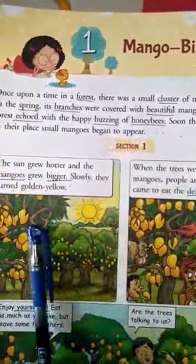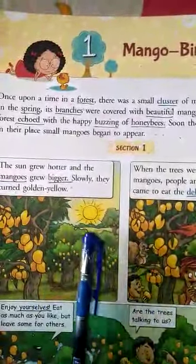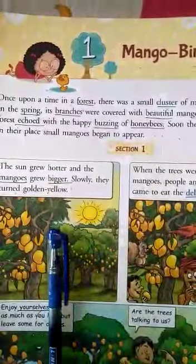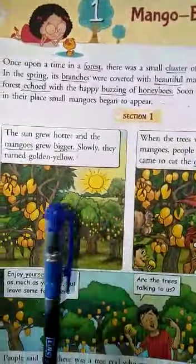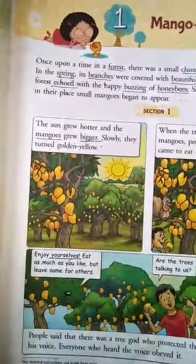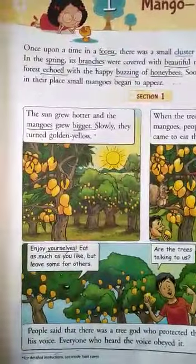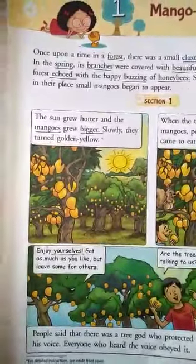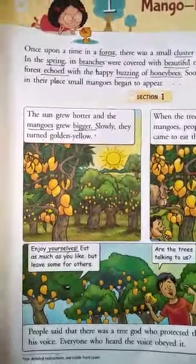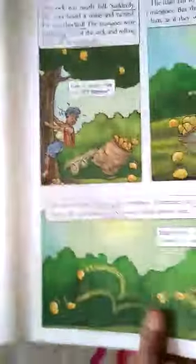The tree god, every time whenever people and animals came to have the mangoes, the tree god asked them and said one thing: eat as many mangoes as you like, but you should leave some mangoes for others also.